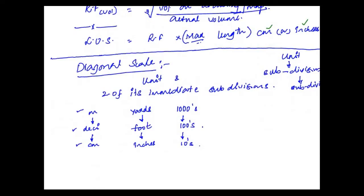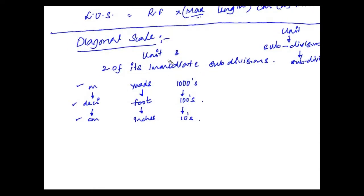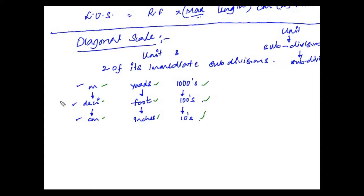In diagonal scale, we can mark or show a unit and two of its immediate subdivisions. For example, you have meters, decimeters and centimeters. Similarly, you can have yards, foot and then inches — all are immediate subdivisions. You can also have a number with thousands place, hundreds place and its tens place. We can mark all these things using a diagonal scale.